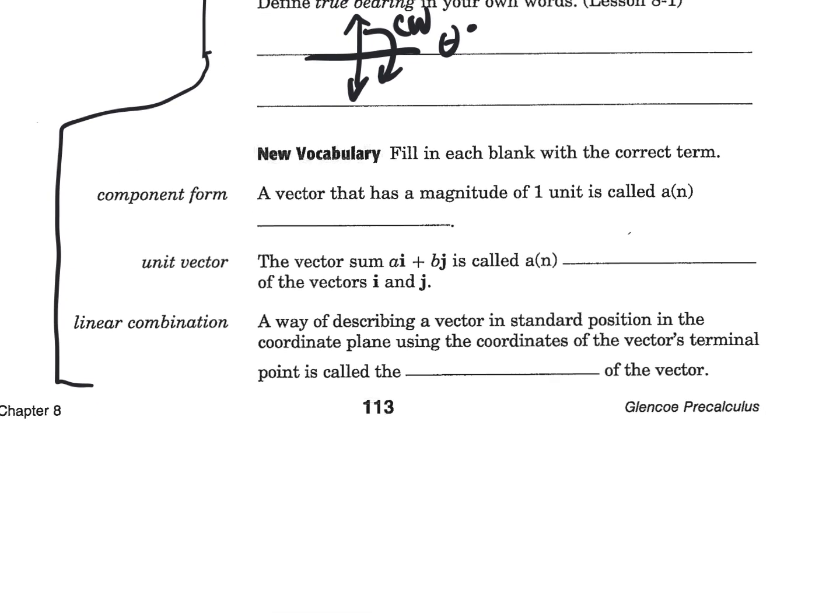Let's see if we can figure out what they are. What do you suppose we call a vector that has a magnitude of one unit? How about that? Unit vector.